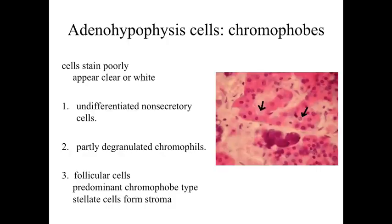Looking at the chromophobes, they're going to be cells that stain very poorly, often appearing clear or white in section. They have a very different appearance as a pale cell in relationship to the pinkish cells in the image. Without specific stains, it's going to be difficult to determine exactly what these cells are in a hematoxylin and eosin stained specimen. Generally, they're going to be undifferentiated, non-secretory cells or follicular cells. The follicular cells are going to be the predominant chromophobe type — a stellate cell forming the stroma or supporting meshwork within this region. Some books also describe them as partly degranulated chromophils, but if you see a pale cell in the anterior pituitary, you should think of it as one of these follicular cells, the supportive cells within this area.